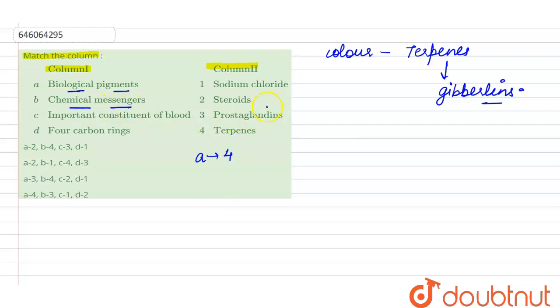Talking about chemical messengers, the hormones which are the local hormones are associated with production of pain in the body. So one of the actions is production of pain.